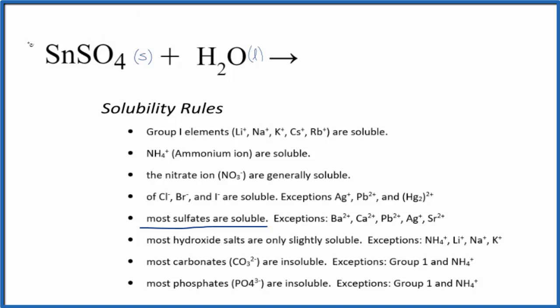So when we have tin2 sulfate, it'll break apart into its ions. The sulfate ion, the whole thing, 2 minus. Good one to remember. That means the tin has to be 2 plus. So we'll have our tin2 ion, Sn2 plus, and then we'll have that sulfate ion, SO4 2 minus.